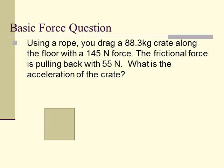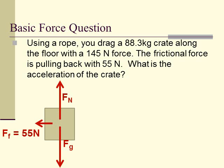Next we draw a free body diagram. We know there's a force of gravity going downwards and a normal force going up. Since it's not accelerating up or down, these two forces are equal to each other. There is a force of friction backwards of 55 Newtons and a force forward of 145 Newtons — labeled tension because it says it was being pulled by a rope. I drew the tension arrow bigger because it's bigger than friction, as the numbers show.